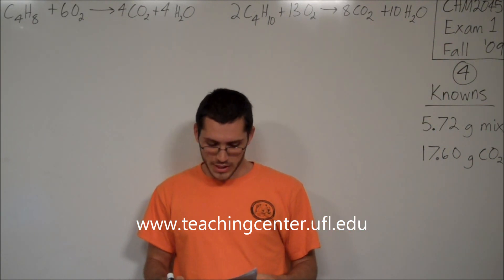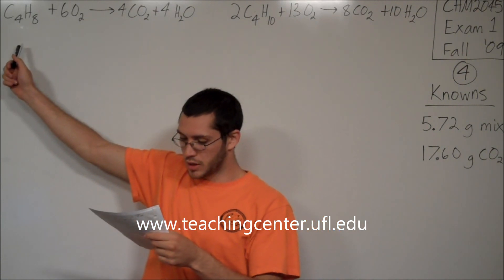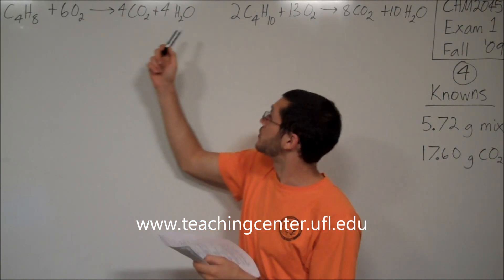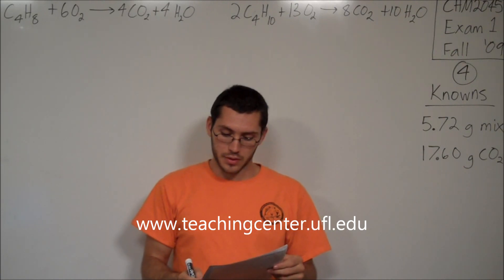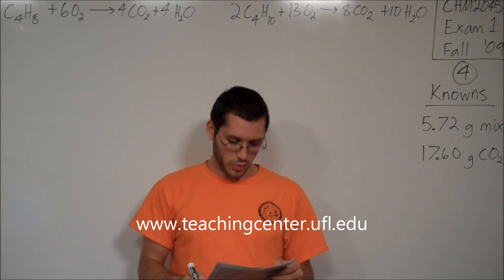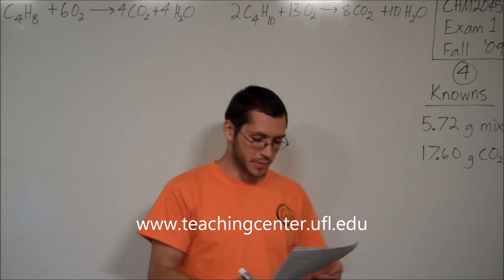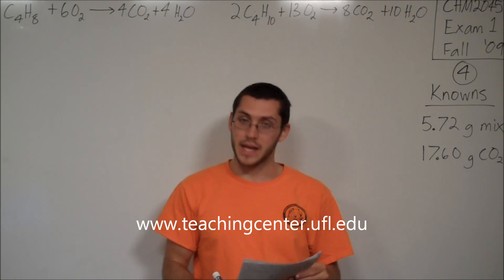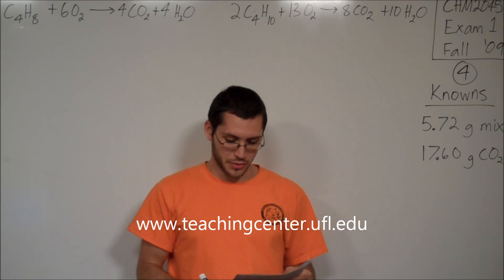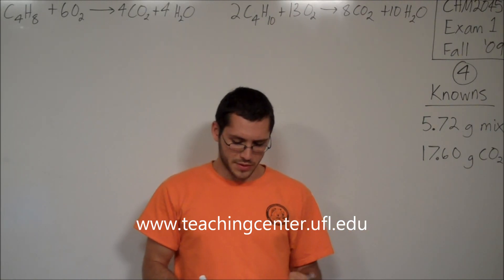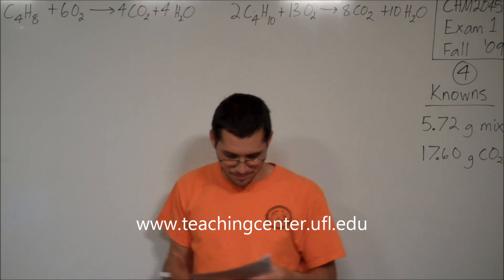Number four says: a mixture of butene, C4H8, and butane, C4H10, is combusted in air to give CO2 and water. Suppose you burn 5.72 grams of the mixture and obtain 17.60 grams of CO2. What is the mass of the butene closest to in the mixture?